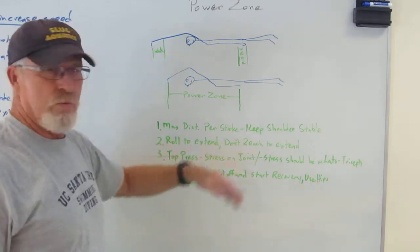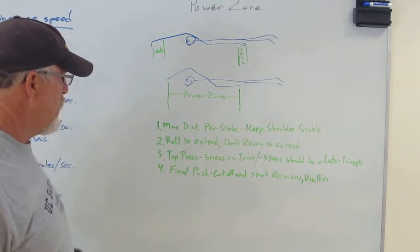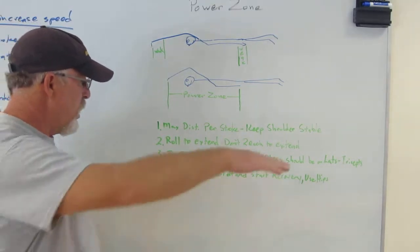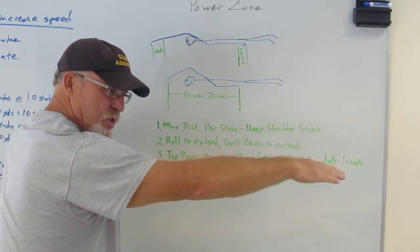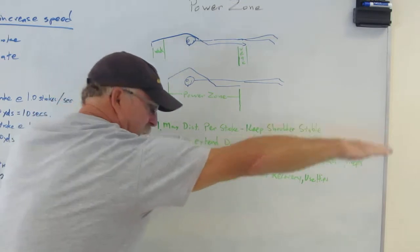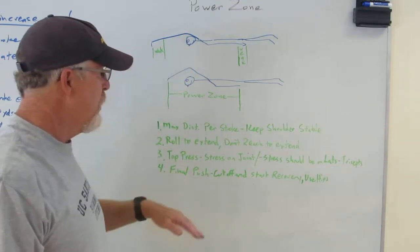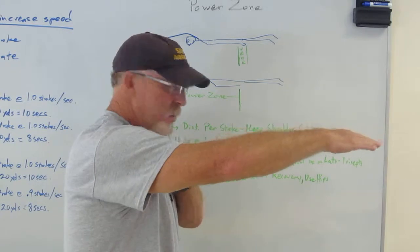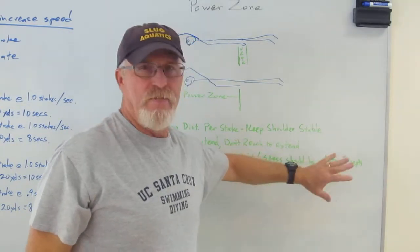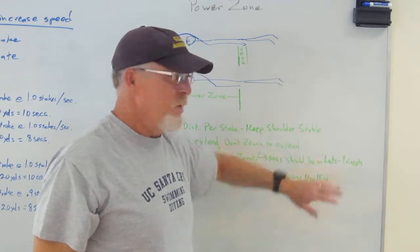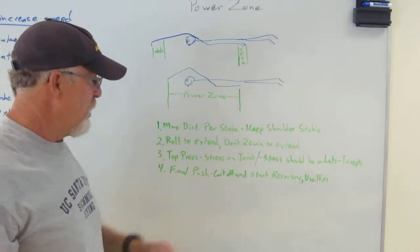Roll to extend, just reiterating what I've already said. When you are out on the top and you're beginning to press, be careful, stay stable with the joint. Out here, when you're pressing, it is very weak and you want to keep the stress more on the lats and the triceps and that's just a simplified way of talking about the muscle groups, there's a whole lot of other things involved.